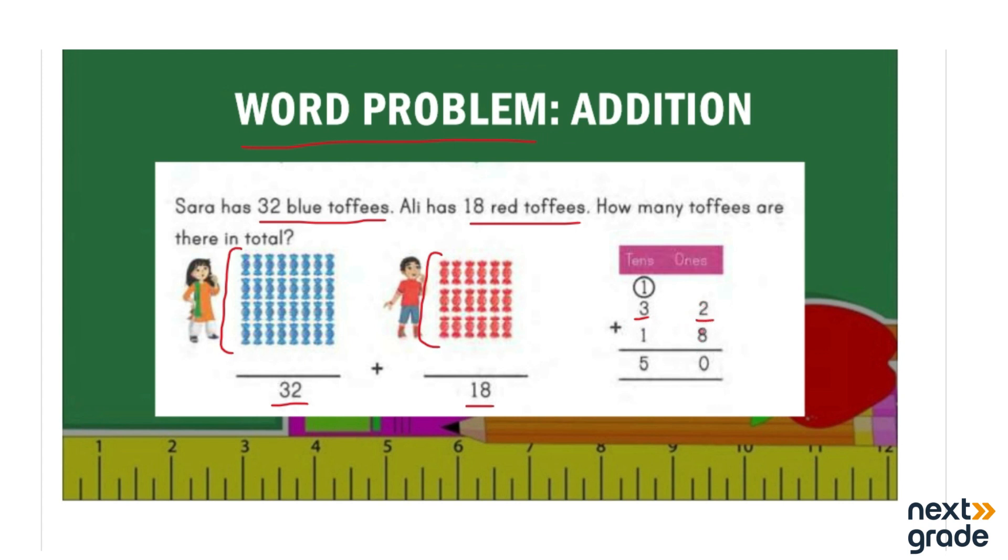Now, when we add 2 and 8, what does it become? We will count 2 more: 9, 10. So it becomes 10. That means you have to put 0 over here and we have to carry one number forward. Because we learned that when the number exceeds 10, we have to add that number in the next place value. So we gave one number to the next place value and it will be added to 3. So 1 plus 3 is 4 and 4 plus 1 is 5. How many toffees do they all have together? They have 50 toffees all together.